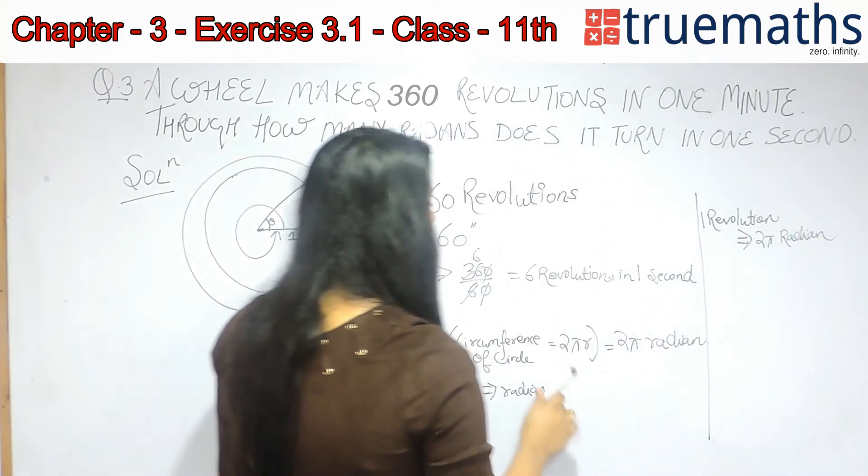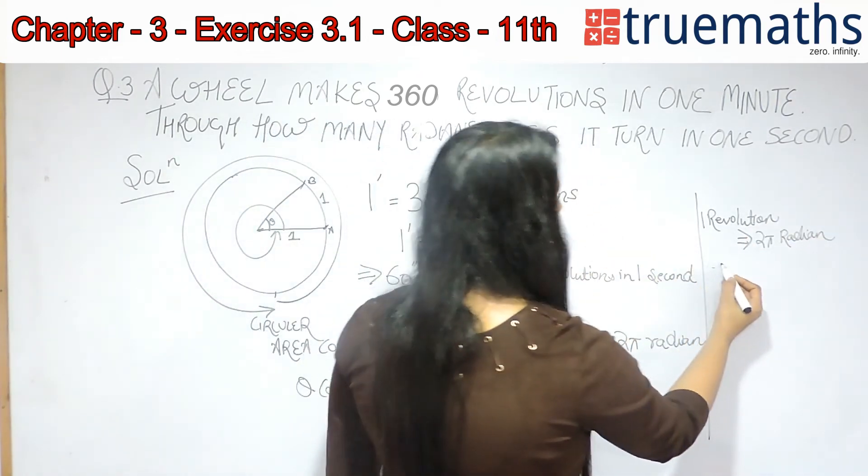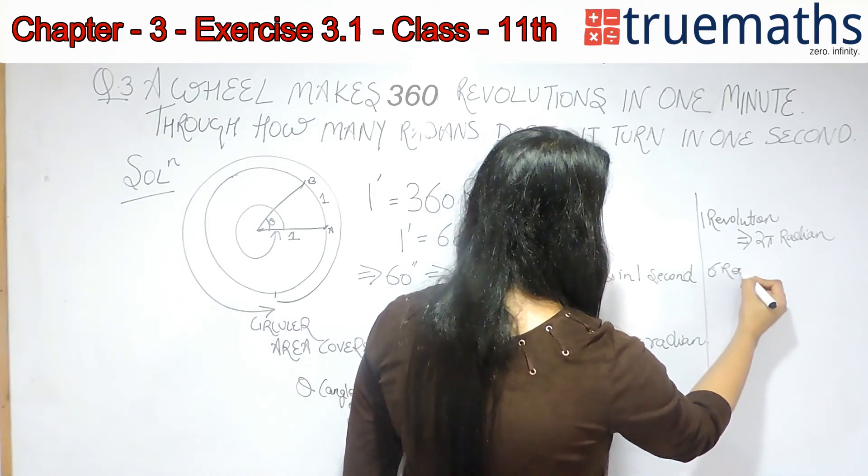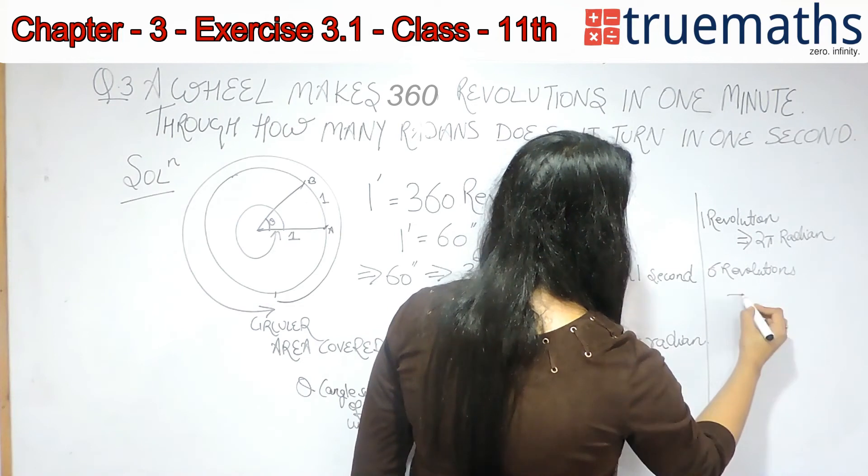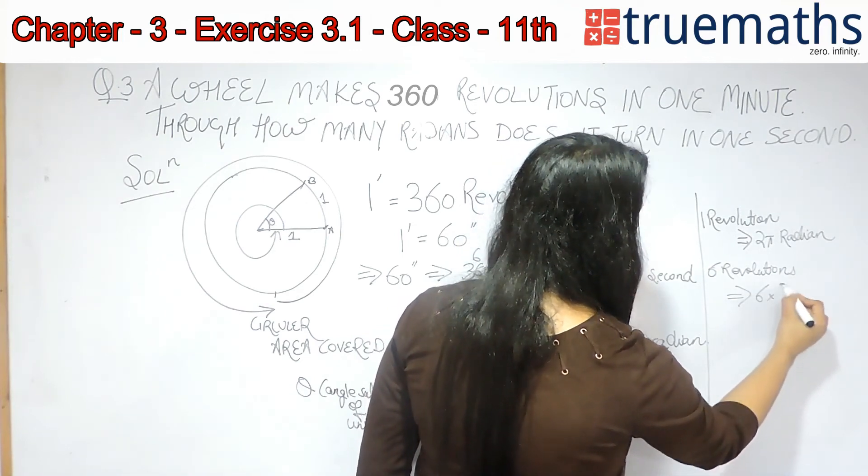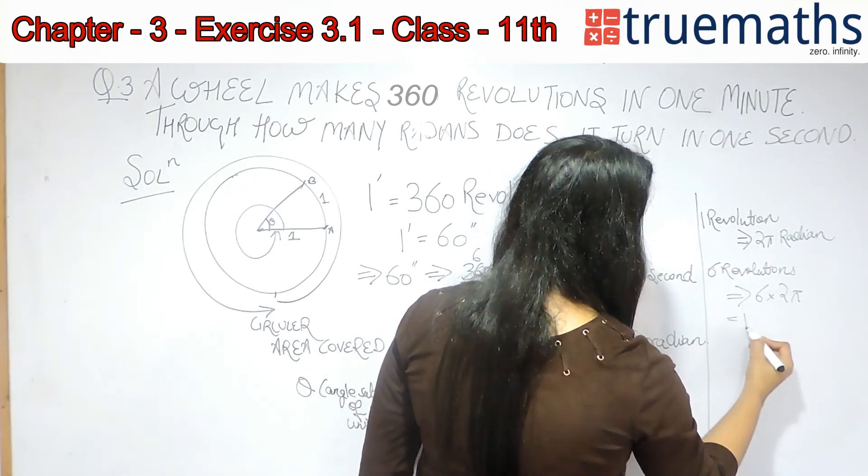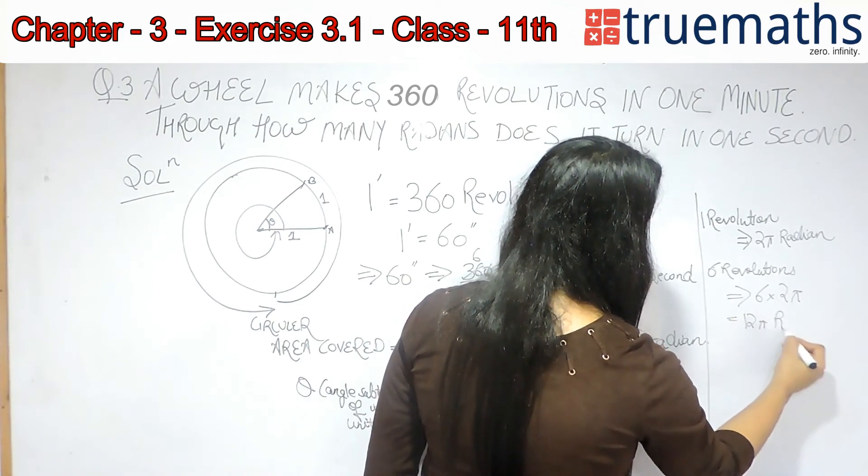Therefore, in 6 revolutions, the wheel will cover how much? 6 into 2π, that is 12π radians.